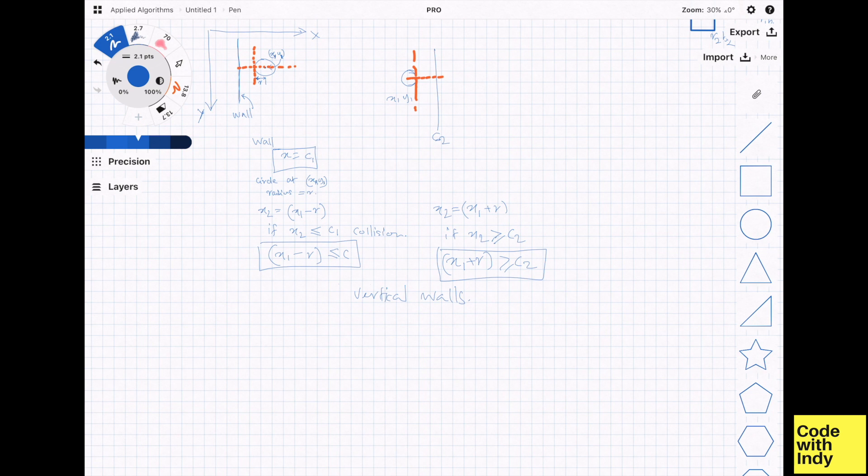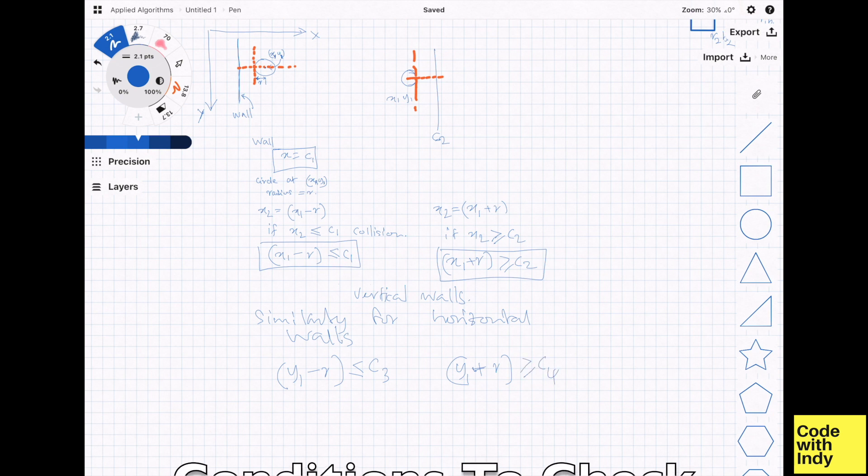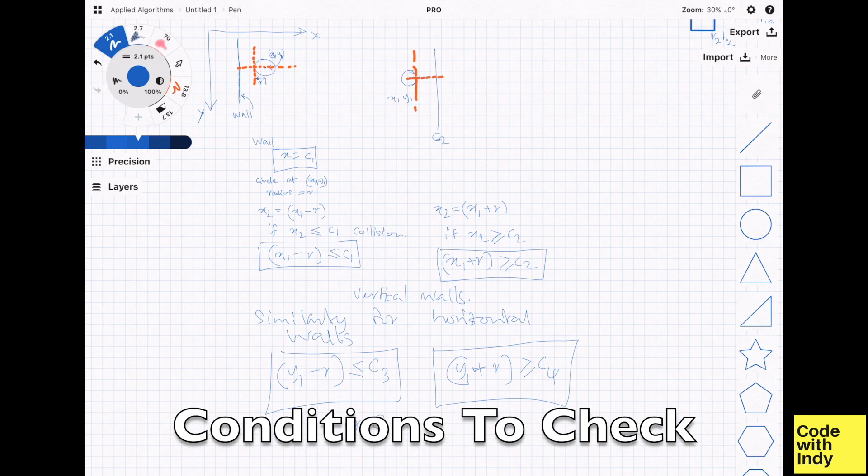Similar to this, we can quickly derive the horizontal walls. y1 less than or equal to c3 plus r. y1 greater than or equal to c4 minus r. So putting together everything we have right now, we get four inequalities.